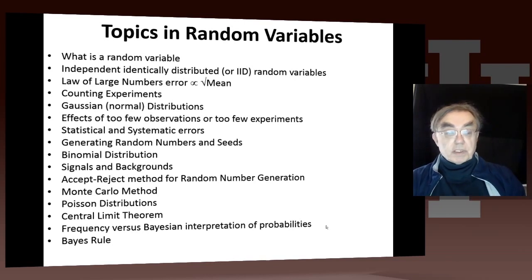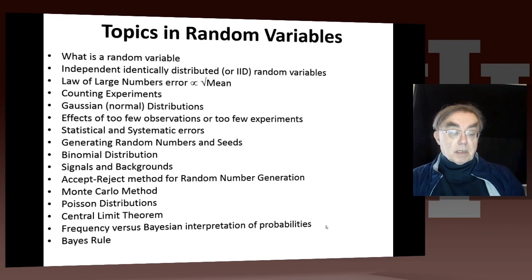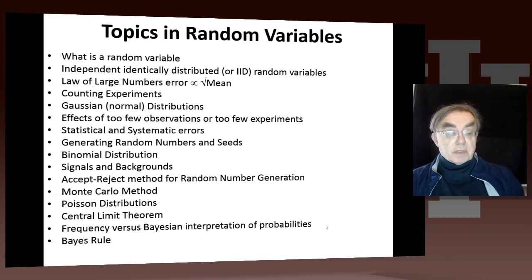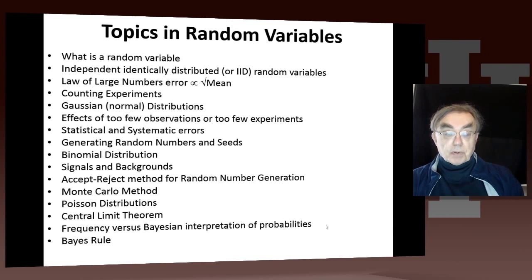We will have another important distribution related to the binomial distribution called the Poisson distribution. We will have the central limit theorem, which underlies the theory of a lot of this material. And then we have a little diversion at the end of unit 4 on frequency versus Bayesian interpretation of probabilities, and also Bayes' rule, which is a very important rule for combining information.